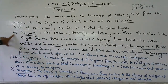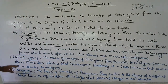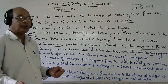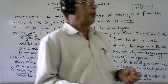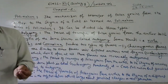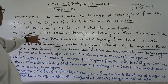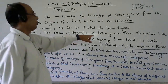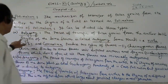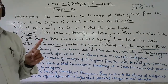One is called autogamy, another is called geitonogamy, and the third is called xenogamy. Auto means self. When the transfer of pollen grains takes place within the same flower — from the anther to the stigma of the same single flower — that is autogamy.